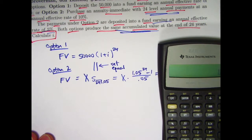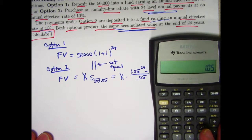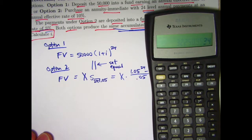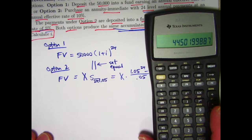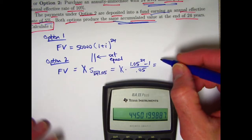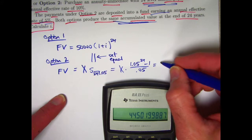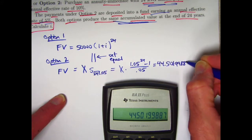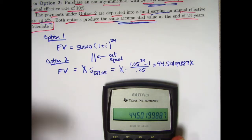1.05 to the 24th power is this. Subtract 1, divide by 0.05. 44.5 times X is the future value that we ultimately set equal to this. 44.50199887X. Just being extra careful to carry as many digits of accuracy as I can so my errors don't pile up on me.